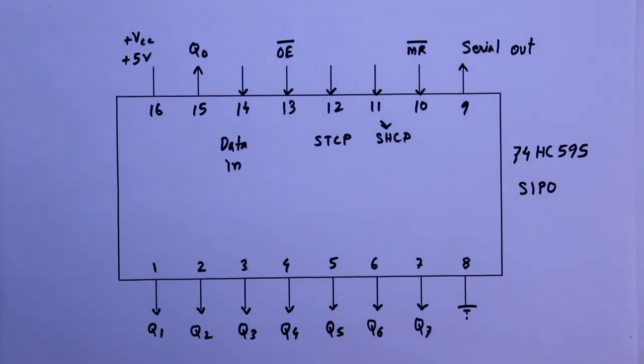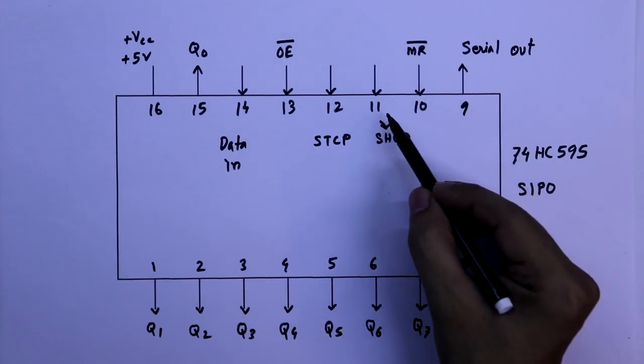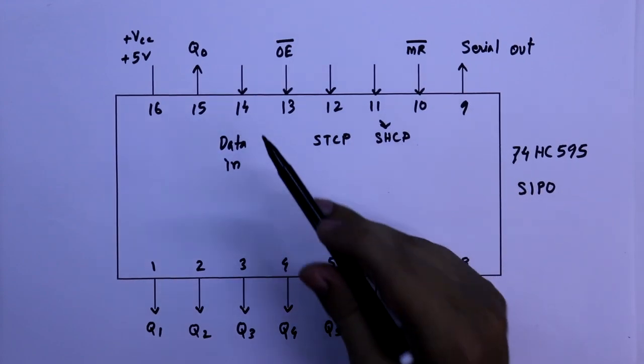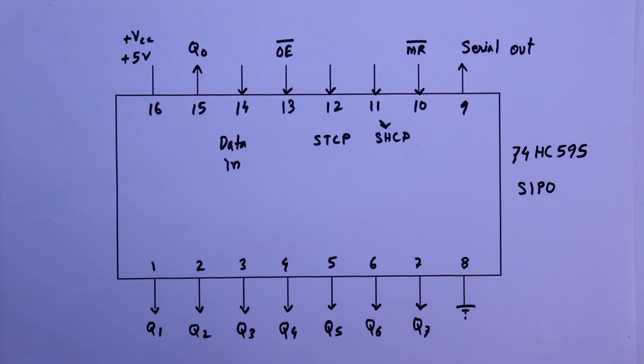We already discussed its pin diagram and their working. To cascade the IC, we need pin number 9, 11, 12 and 14. So in this video, we will discuss on this only.